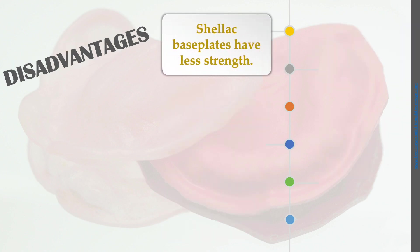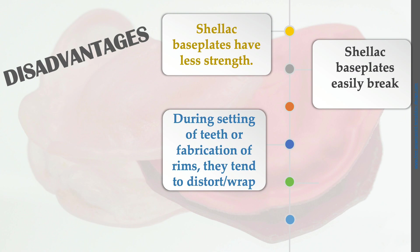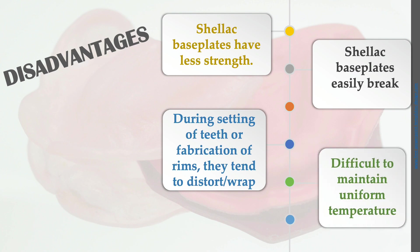Disadvantages of shellac record base: shellac base plates have less strength and become brittle once hardened. They are easily breakable and, during setting of teeth or fabrication of the rim, they tend to distort or warp, since heating the wax causes distortion of the shellac base plate. It is also difficult to maintain uniform temperature.